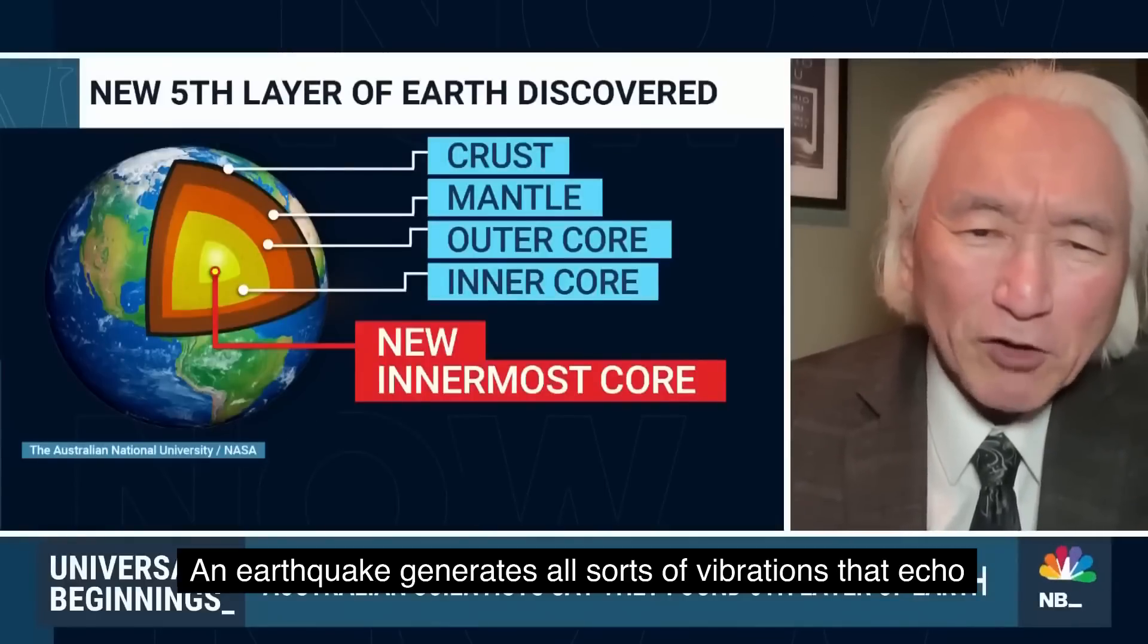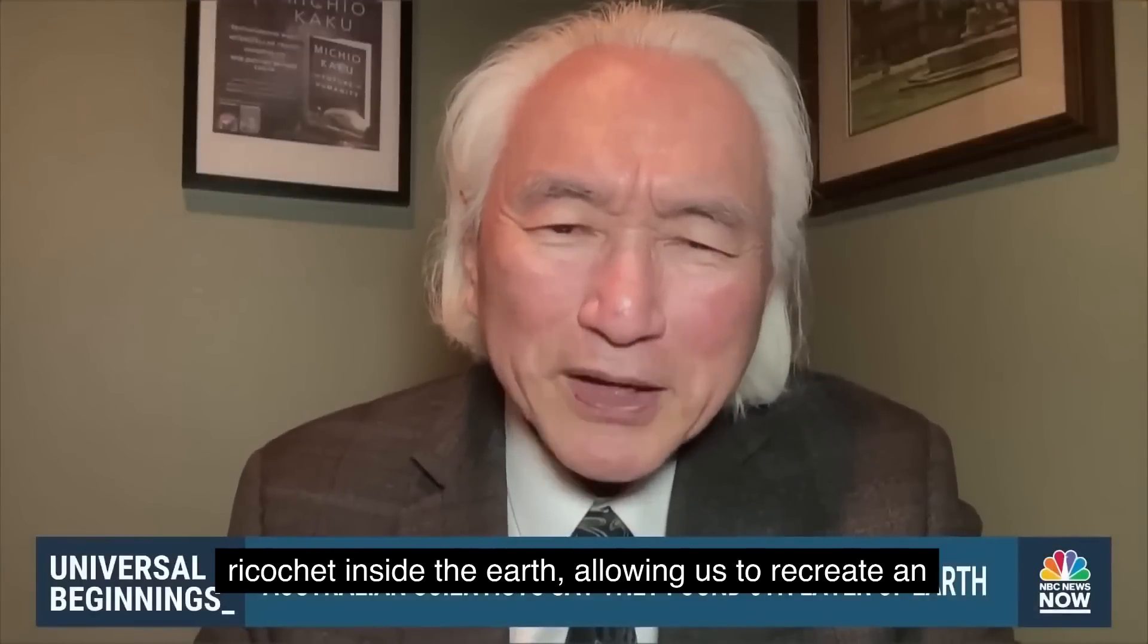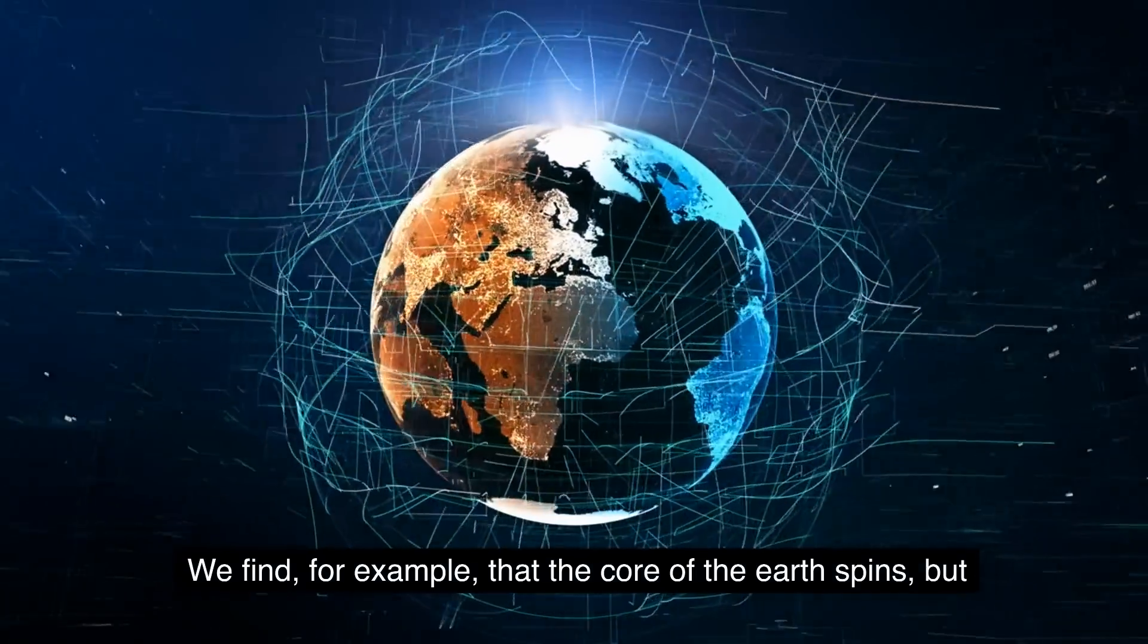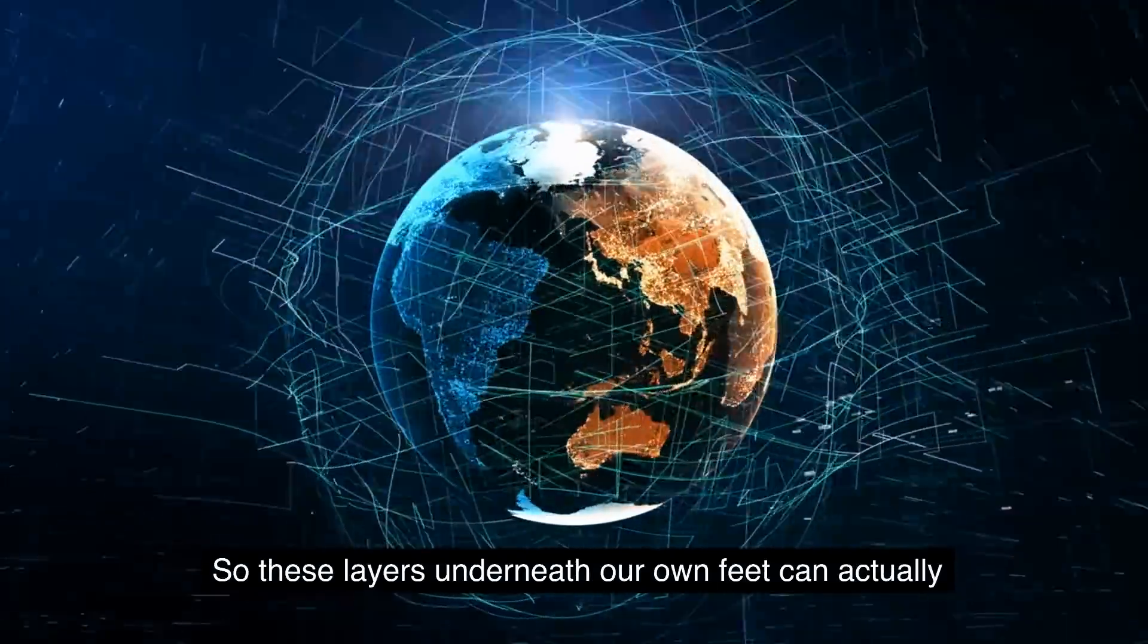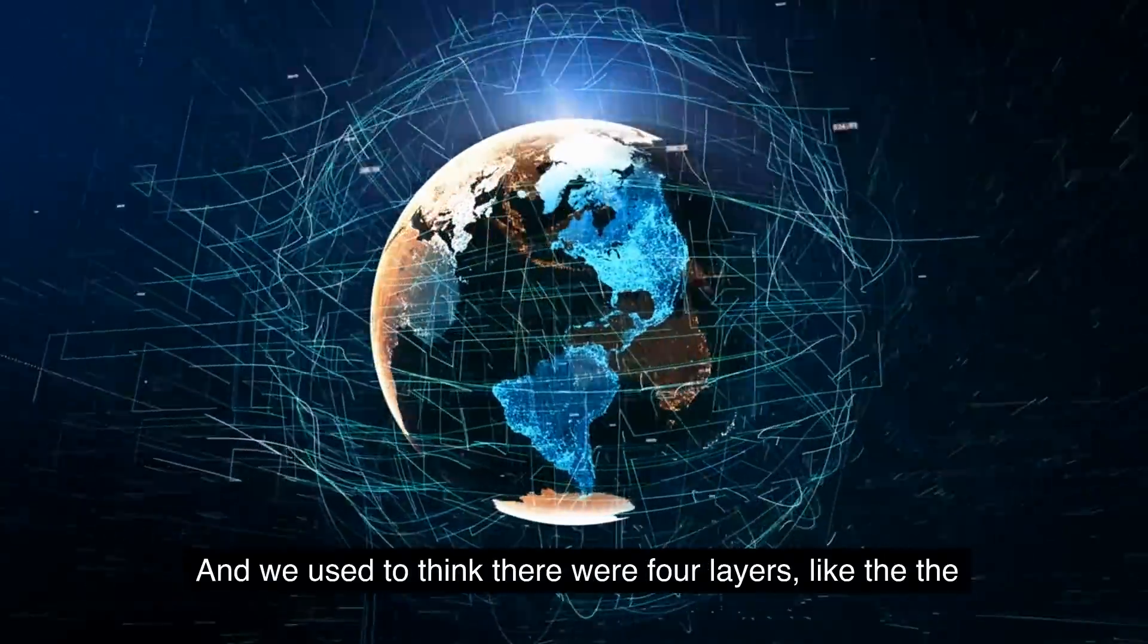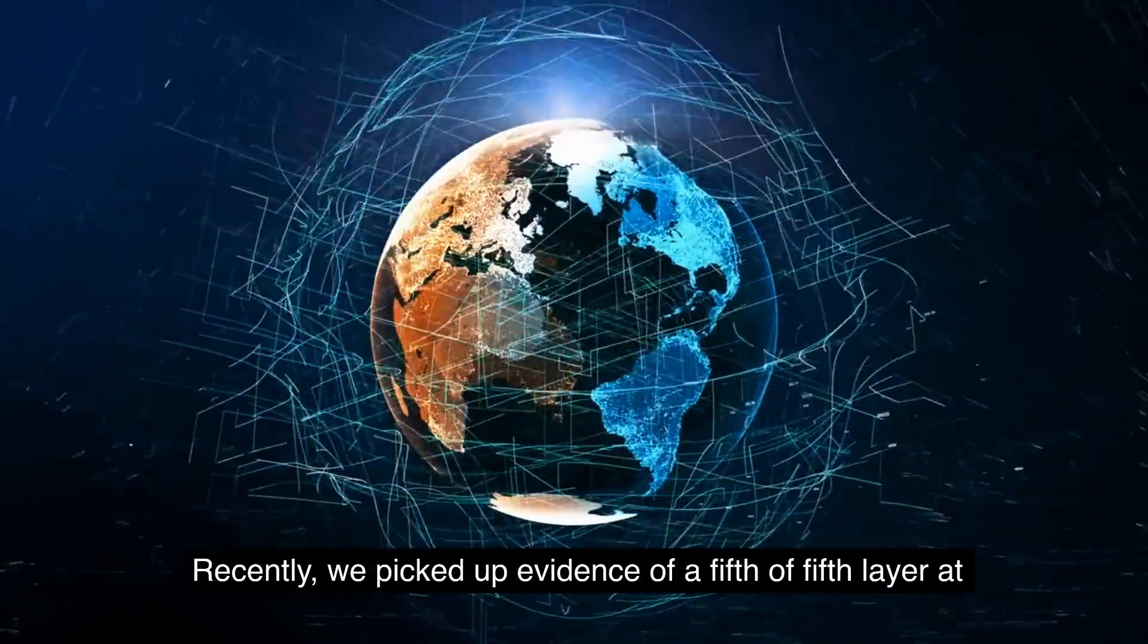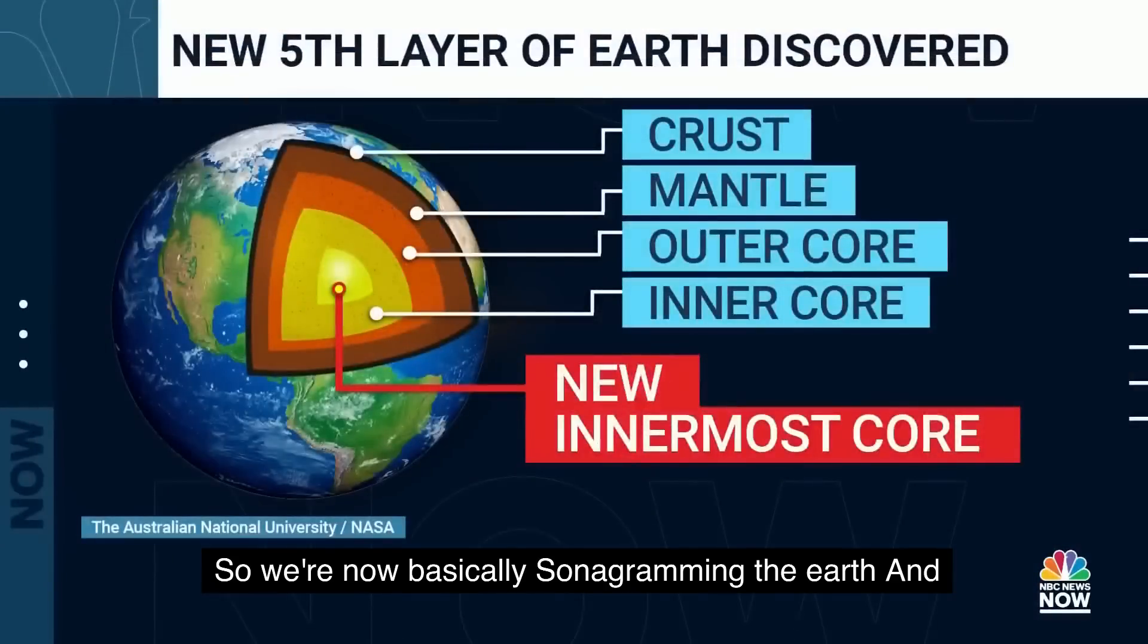An earthquake generates all sorts of vibrations that echo, ricochet inside the Earth, allowing us to recreate an image of the center of the Earth. And we find some enormously interesting things. We find, for example, that the core of the Earth spins, but the crust of the Earth can spin in the opposite direction. So these layers underneath our own feet can actually rotate in opposite directions. And we used to think there were four layers, like the crust and the mantle, four layers inside the Earth. Recently, we picked up evidence of a fifth, a fifth layer at the very center of the Earth. So we're now basically sonogramming the Earth.